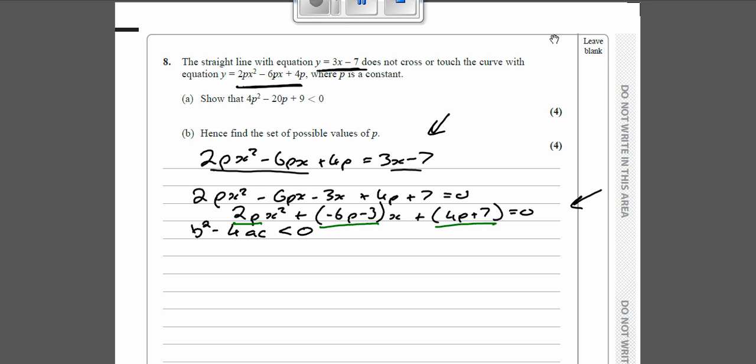So b² is going to be this thing squared. Now whenever you have a bracket and you square it, you're going to write it out twice. So minus 6p minus 3 squared is minus 6p minus 3 times minus 6p minus 3, take away 4ac, so that's 4 times 2p times 4p plus 7, and that is going to be less than 0.